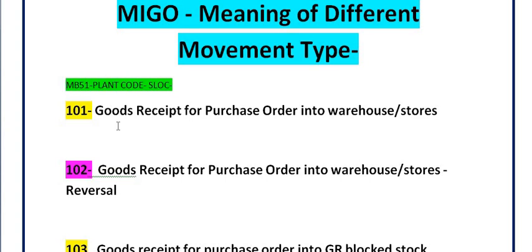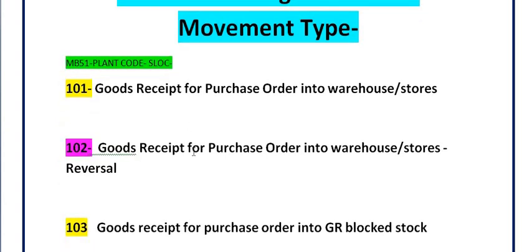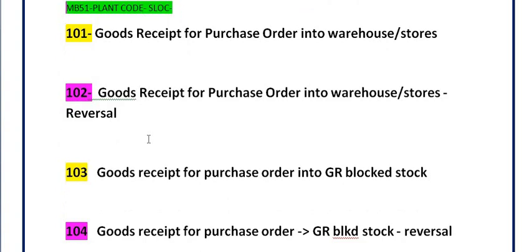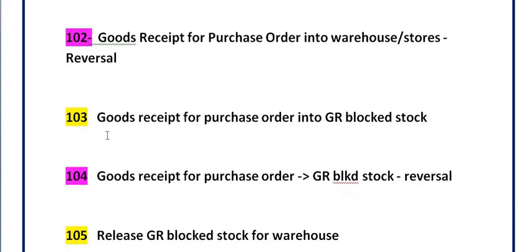If you want to analyze when your project inventory stock came into the warehouse, you can apply movement type 101 in the MB51 transaction code and easily track when your inventory arrived — 99.99% of the time. Movement type 102 is the reversal of movement type 101. When you cancel the MIGO document that you received against a purchase order, movement type 102 is triggered.